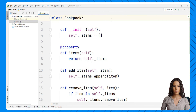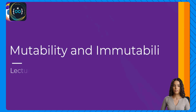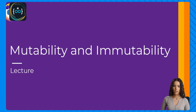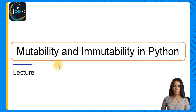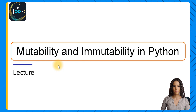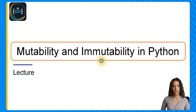Now you know how to identify aliasing in Python, how it works, and the possible consequences of creating aliases. Let's see two very important concepts in object-oriented programming — mutability and immutability — that you will see very commonly in Python.